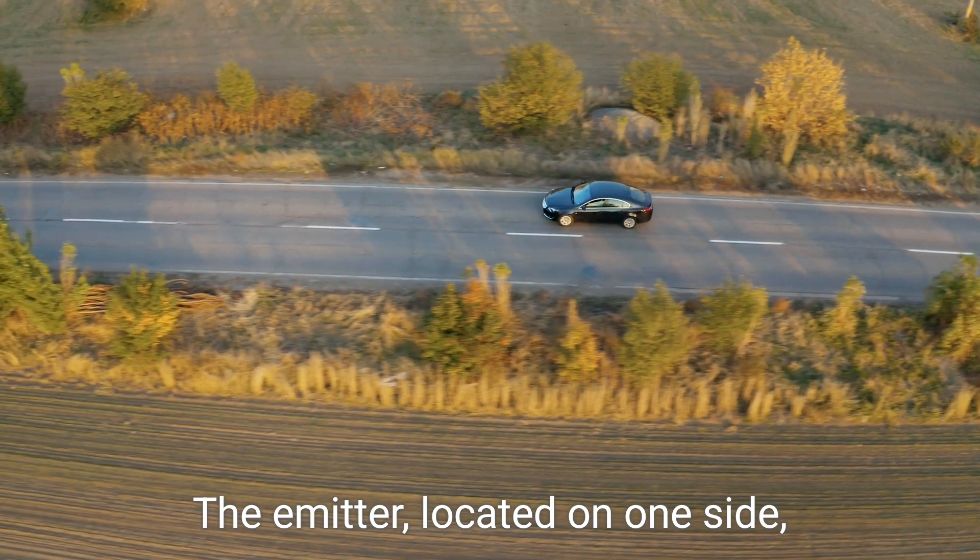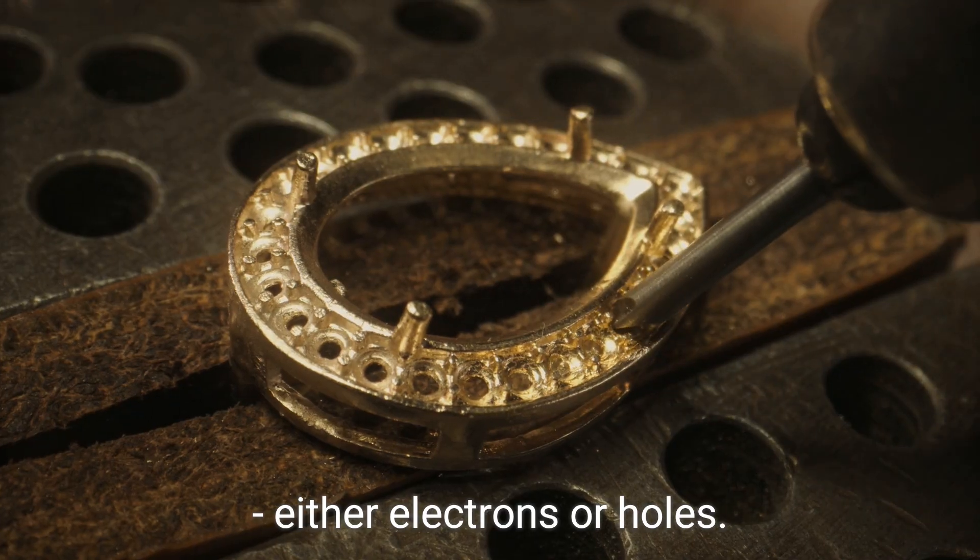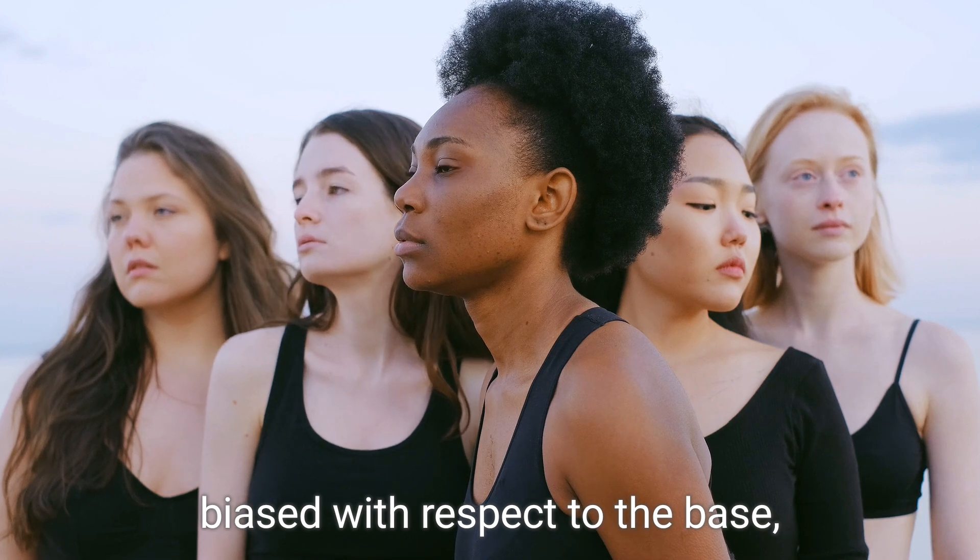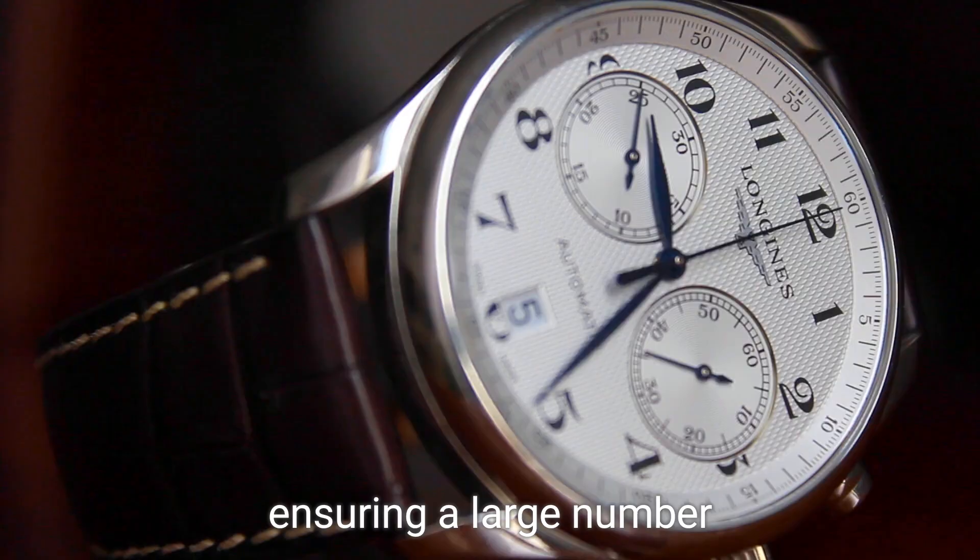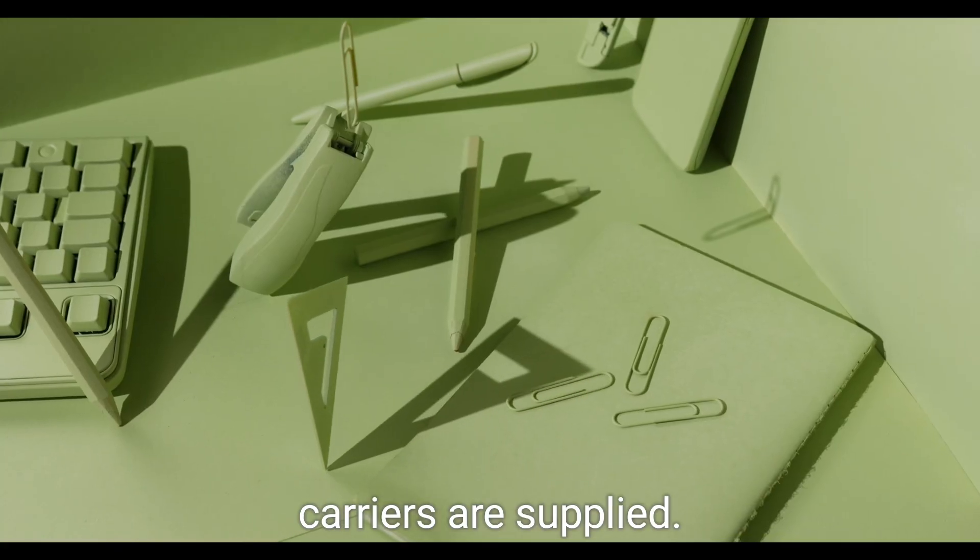The emitter, located on one side, supplies charge carriers, either electrons or holes. It is always forward biased with respect to the base, ensuring a large number of majority carriers are supplied.